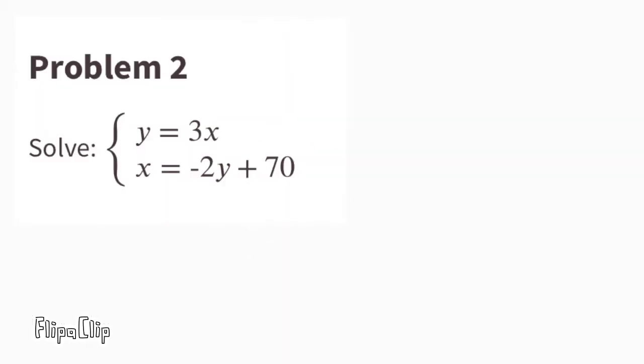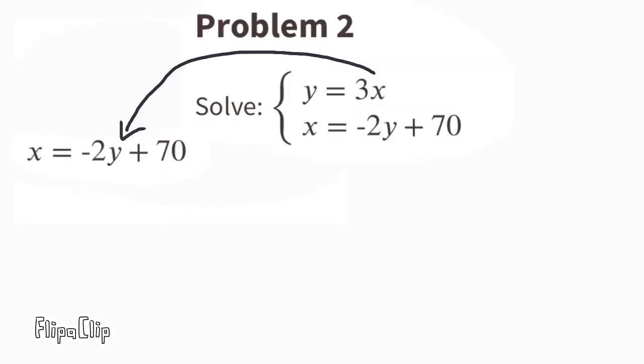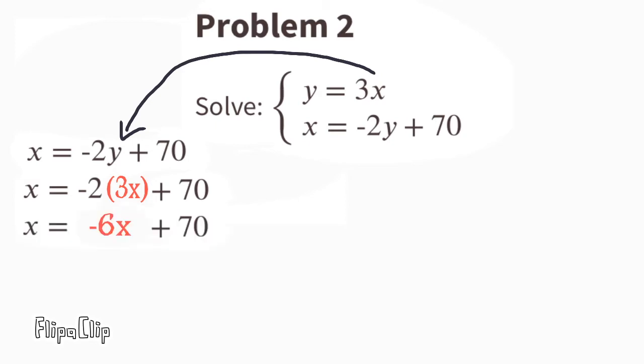Problem number two, solve. y equals 3x. We can substitute the y with 3x. Now the equation reads x equals negative 2 times 3x plus 70. Negative 2 times 3x is negative 6x, so x equals negative 6x plus 70.